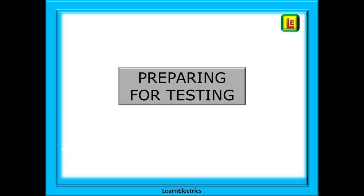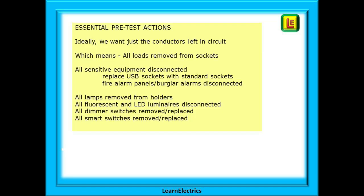We can't just turn up on site and start testing though. We must prepare the installation for testing and this is where experience and practice are essential. The actual preparation is easy but there are a lot of things to think of. With practice you will begin to do these things automatically. Ideally we want just the conductors left in the circuit — it is the conductor insulation that is being tested. We are testing there are no cuts or nicks, no nails through the cable or corroded and degraded insulation.